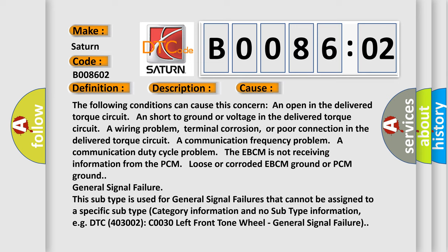General signal failure. This subtype is used for general signal failures that cannot be assigned to a specific subtype category information and no subtype information. For example, DTC 403002 C0030 left front tone wheel general signal failure.